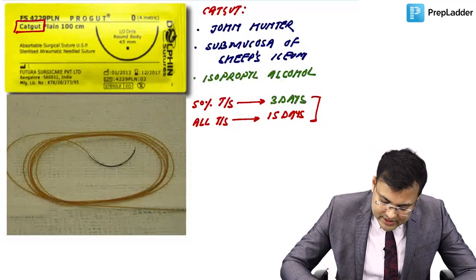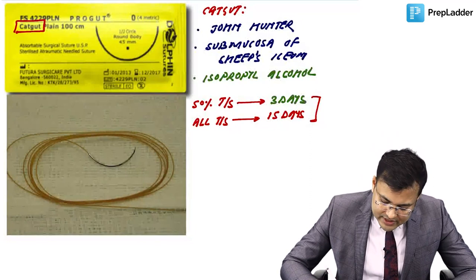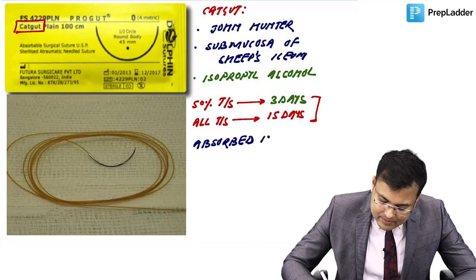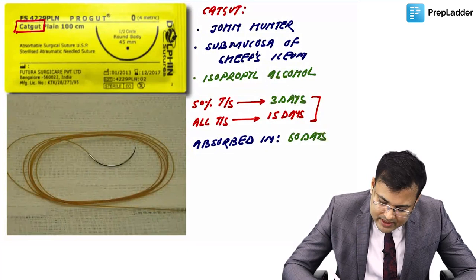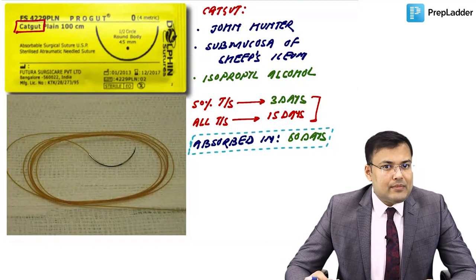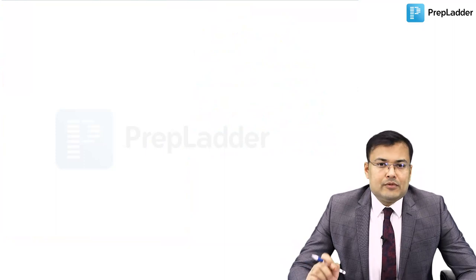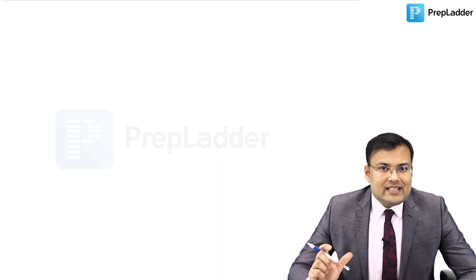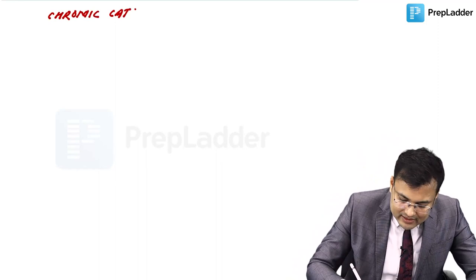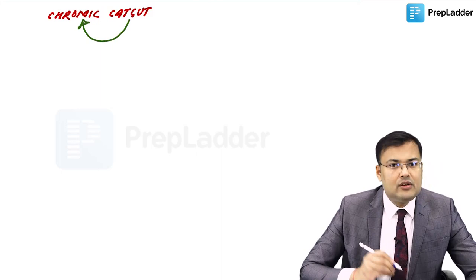When catgut is tanned with chromium salt, it becomes chromic catgut. This improves handling and resists degradation of the suture in tissue. For chromic catgut, tensile strength is lost in 21 to 28 days, and the suture is absorbed in 60 to 90 days.